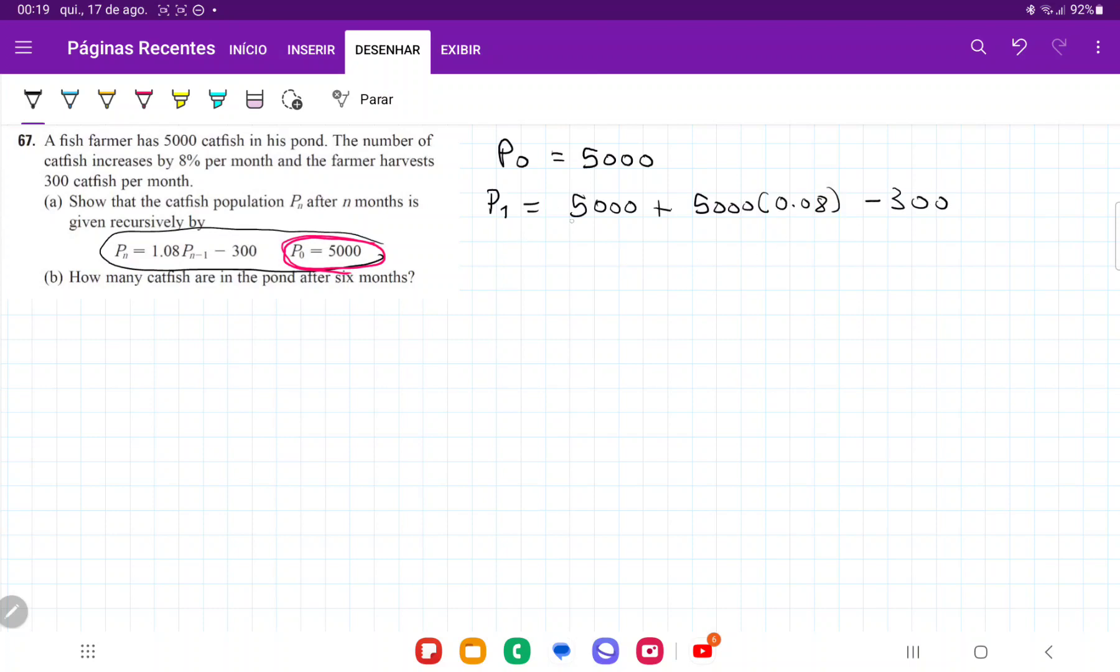If you look at this, this is actually going to be, if we simplify it, that's going to be 5,000. I'm going to factor out the 5,000. So that goes 1 plus 0.08 minus 300, or 5,000 times 1.08 minus 300. And let's see what this is going to be equal to. Let me put it in my calculator. So 5,000 times 1.08 minus 300, that's going to be 5,100.